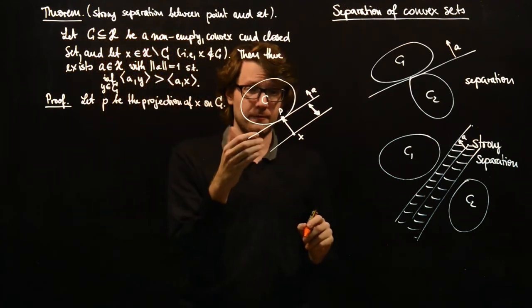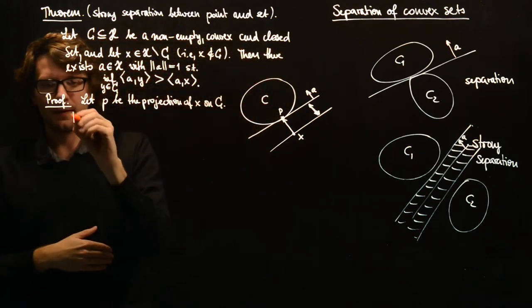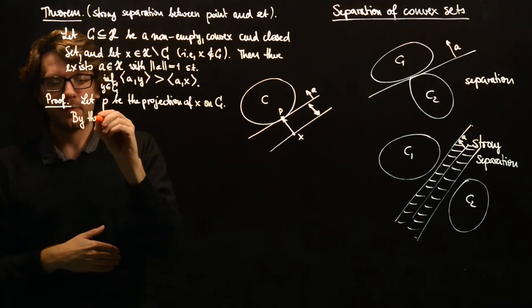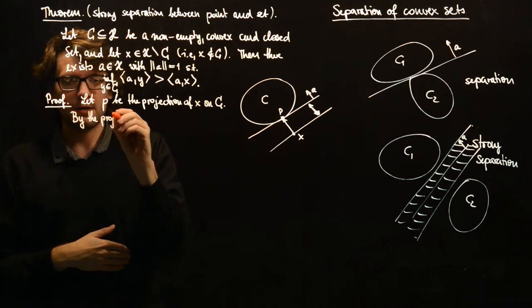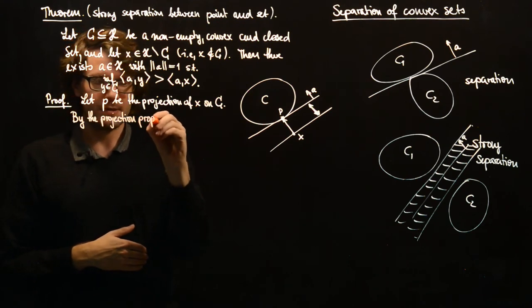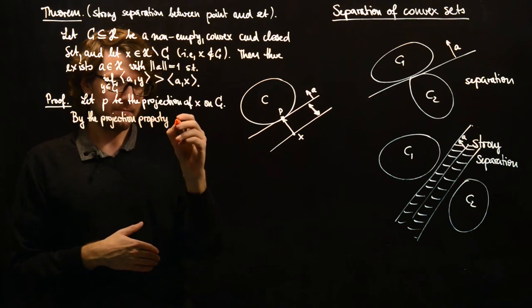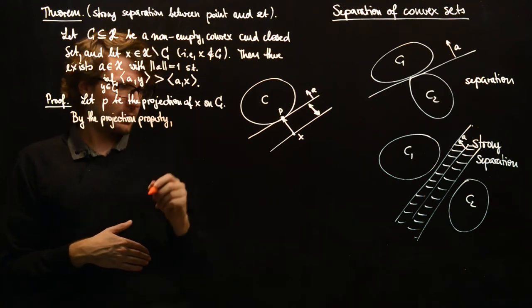So let P be the projection of X on C. What do we then have? So by the projection property, we have characterized this in the proof in the last theorem, in the last video.